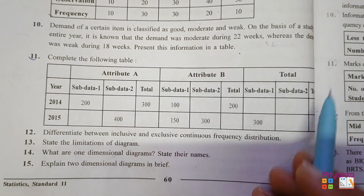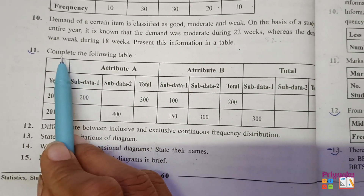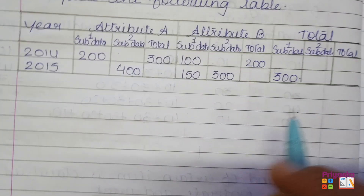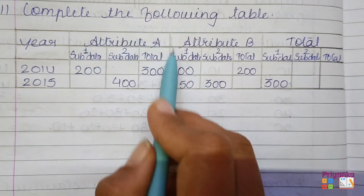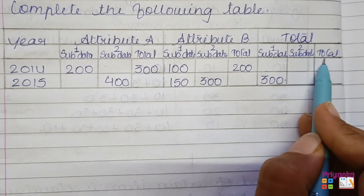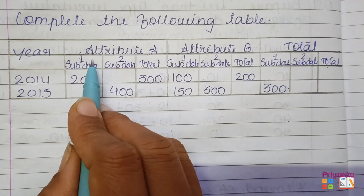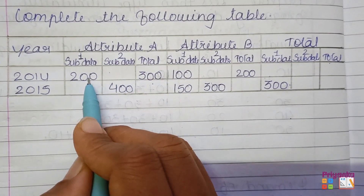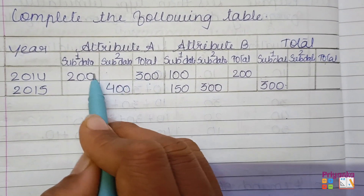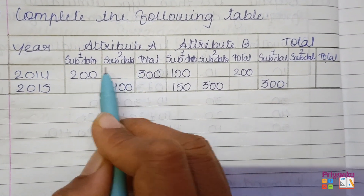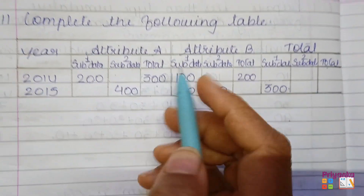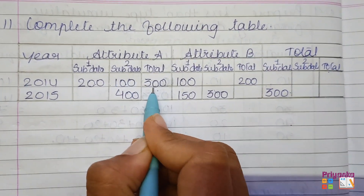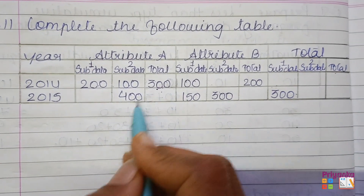Question number 11: a table is given and they ask you to complete it. First, take the table into your book. You can see attribute A, attribute B, and the total is given. First, note that sub-data 1 plus sub-data 2 equals the total. So if we subtract the known value from the total, we get the missing value: 200 minus 300 gives 100. As you can see, 200 plus 100 makes the total 300.